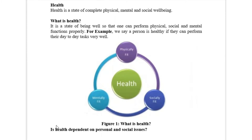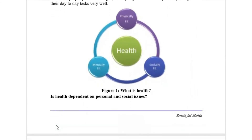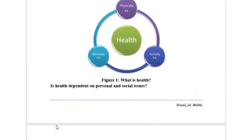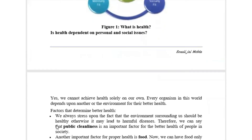Now, the question is — any particular individual's health depends on which things? Health is related to personal habits, food habits, daily activities, as well as social issues. Our environment and our community can also affect our health. Health is not only our personal achievement; our whole society and community matters. Every organism in this world depends on one another and on the environment for better health.